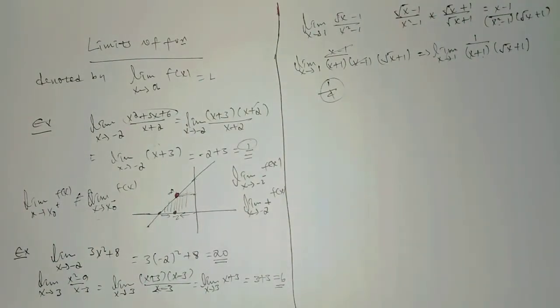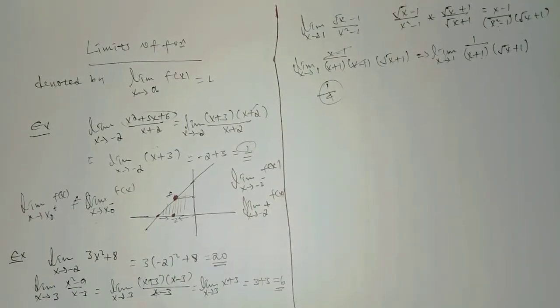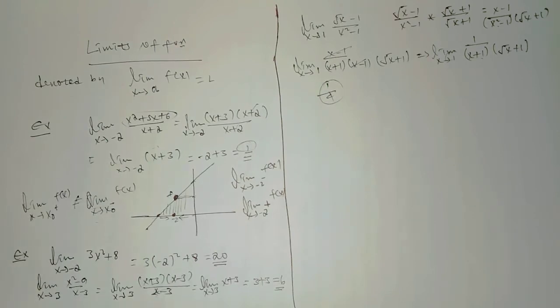Substituting x equals 1: 1 over (1 + 1)(√1 + 1) equals 1 over (2)(2) equals 1 over 4. So the limit is 1 over 4.